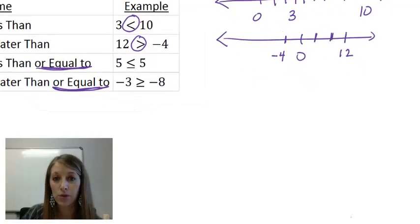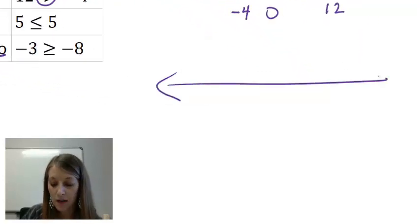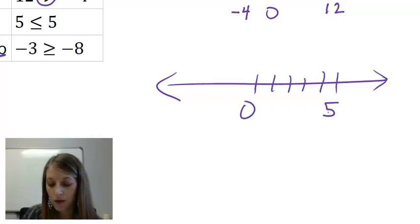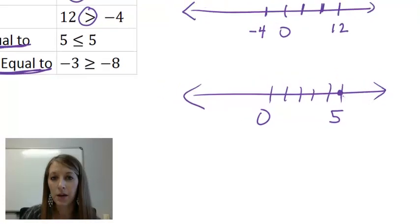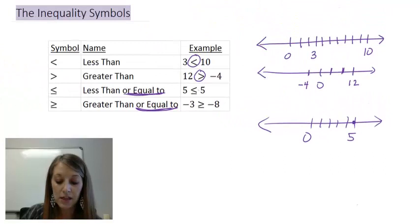So an example here, 5 is less than or equal to 5, meaning that 5 is either less than or 5 is exactly the same number on the number line. So 5 is equal to 5, so this is a true statement.